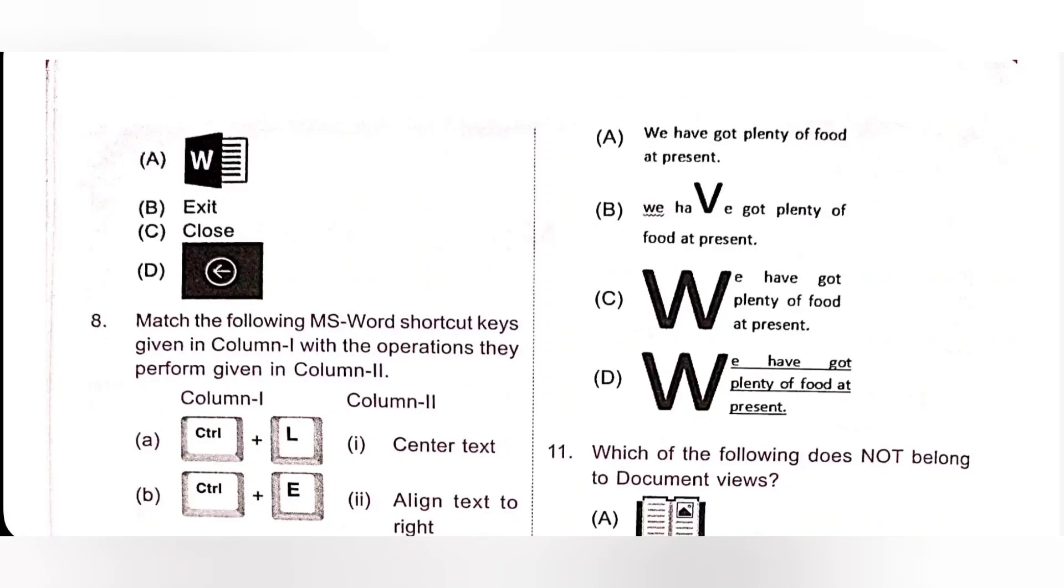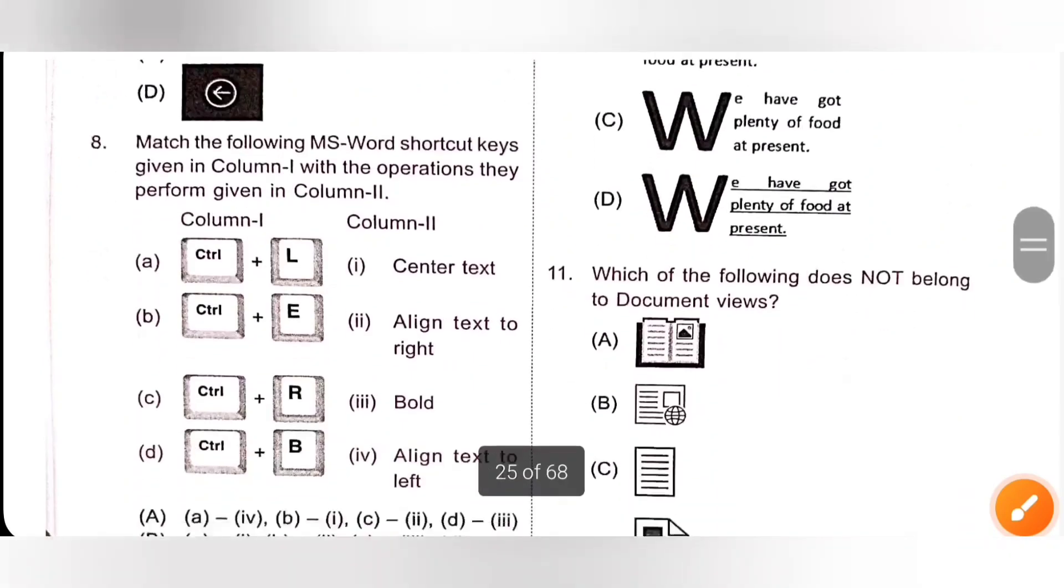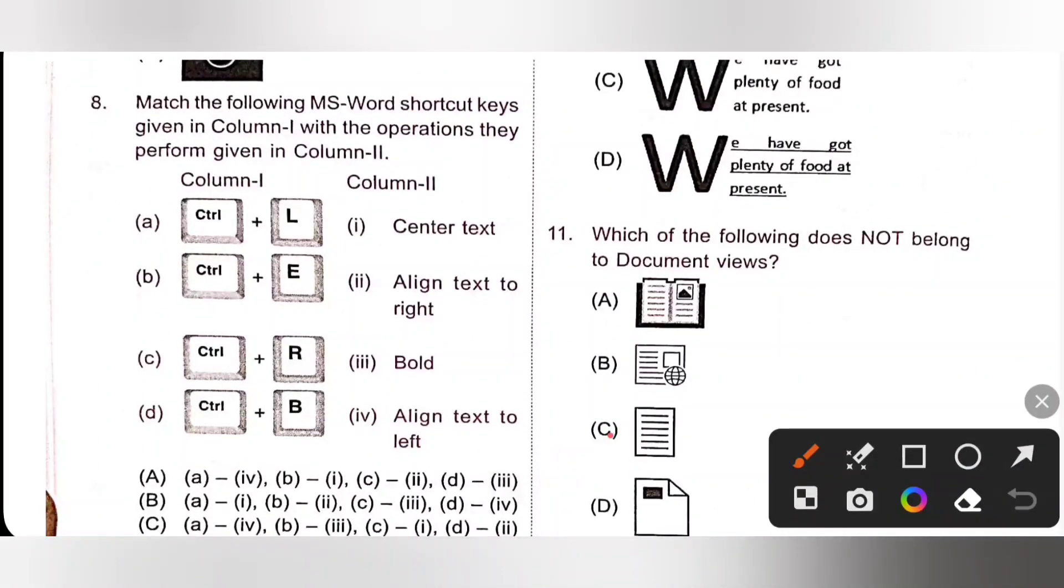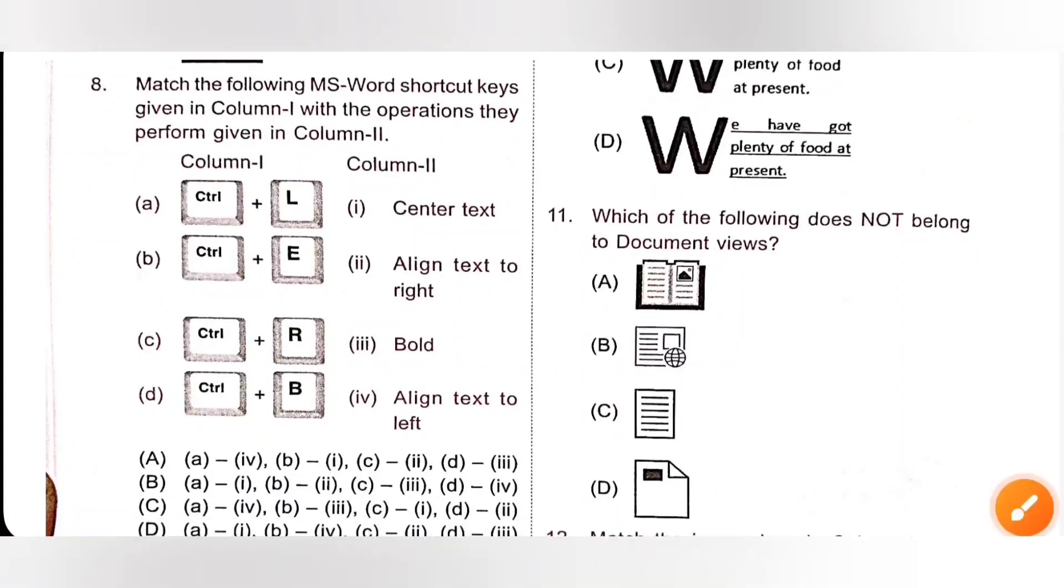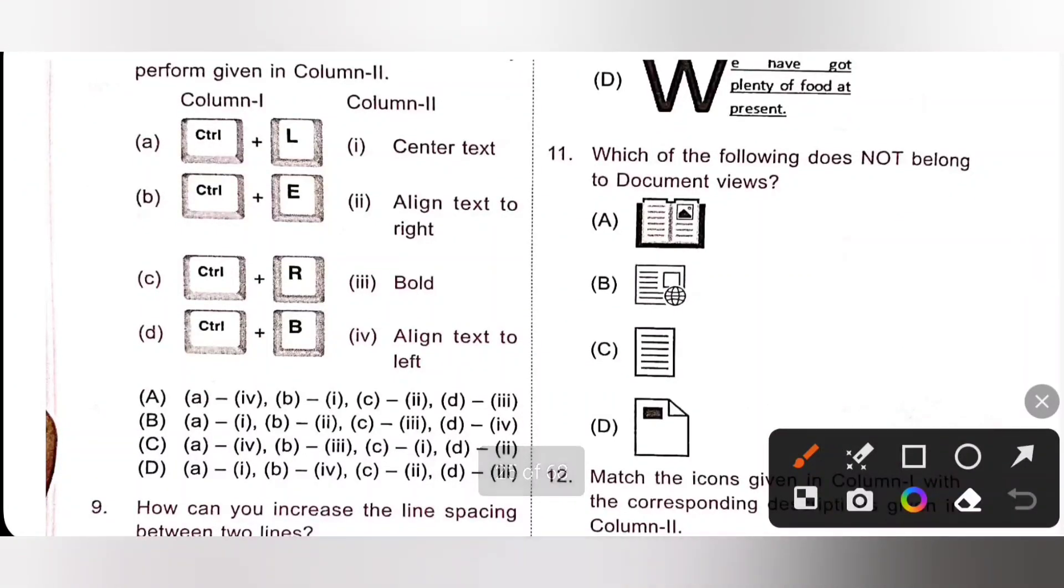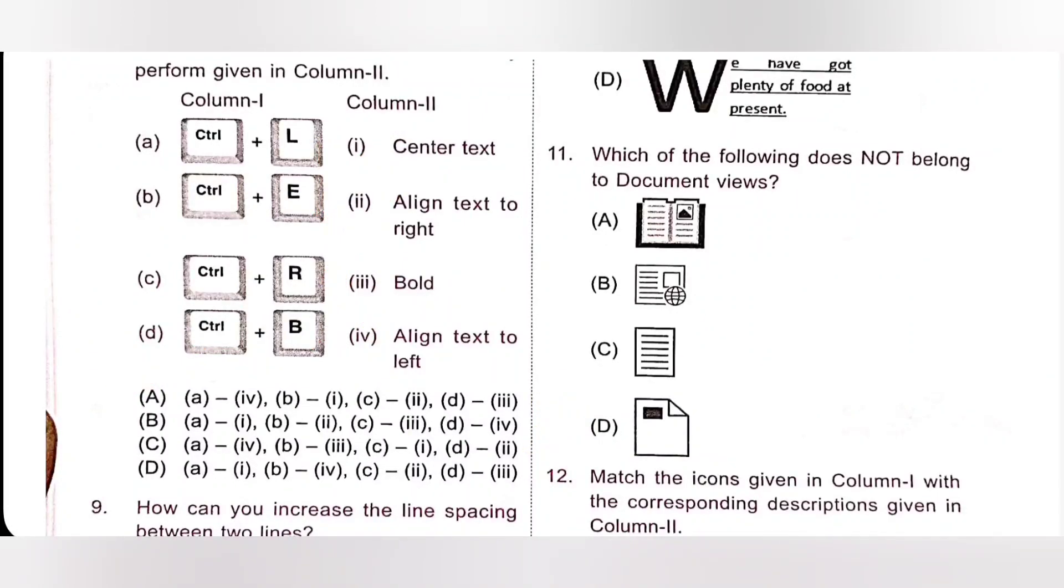Eighth one, match the following MS word shortcut keys given in column 1 with the operations they perform given in column 2. So please pause the video and please check column 1 and then column 2. So A, control plus L, so it is align text to the left, A4. So either option A or C will be the correct answer. Next, control plus E, center text B1. So option A is the correct answer. Control plus R, align text to right. Control plus B bold. So option A is the correct answer.